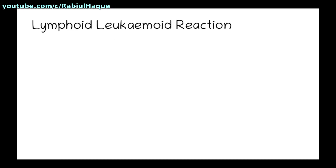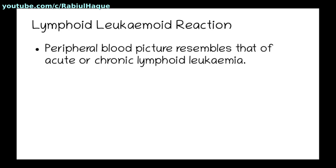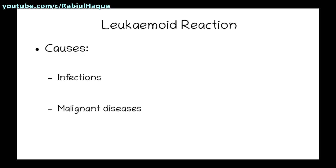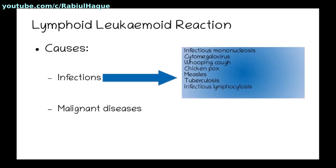Now let's talk about lymphoid leukemoid reaction. Here, the peripheral blood picture will resemble that of acute or chronic lymphoid leukemia. Causes include infections and malignant diseases. Infections that can lead to lymphoid leukemoid reaction include infectious mononucleosis, cytomegalovirus infection, whooping cough, chicken pox, measles, tuberculosis, infectious lymphocytosis, etc.